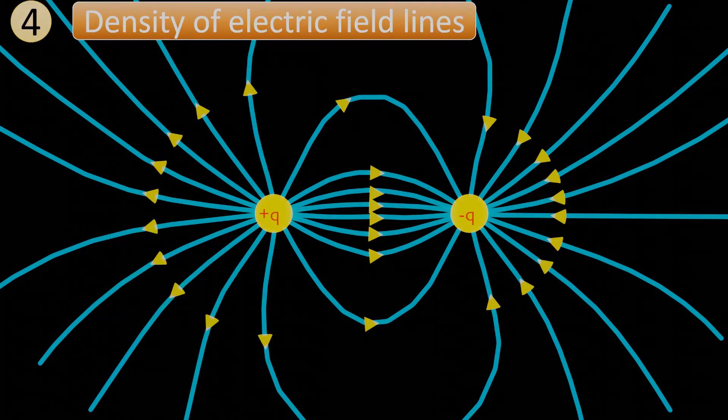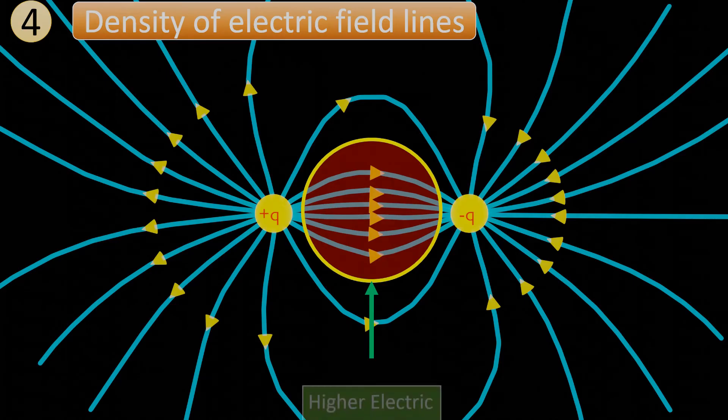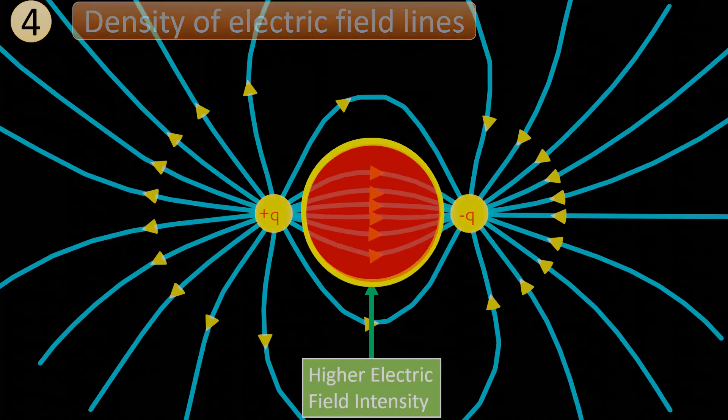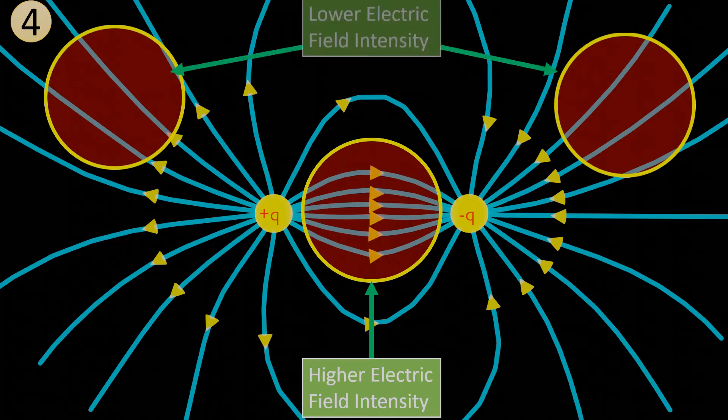The fourth point is the density of electric field lines. The density of electric field lines visually represents the electric field intensity. Where the electric field lines are closer and more crowded indicates higher electric field intensity. As we move away from the charge, the electric field density decreases, indicating a decrease in electric field intensity.